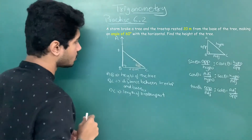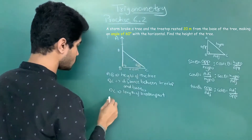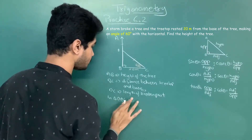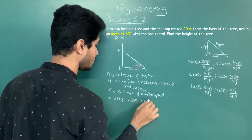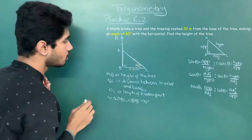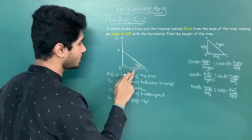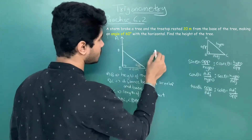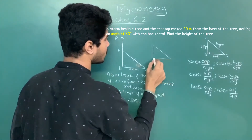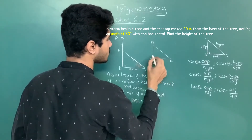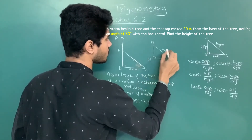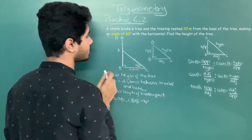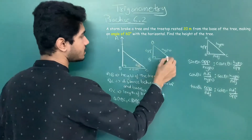We start with triangle DBC, where angle DBC equals 90 degrees. We describe this triangle as a right-angle triangle: DC is the hypotenuse, DB is the adjacent, and the opposite side corresponds to angle C. Angle C is given as 60 degrees.